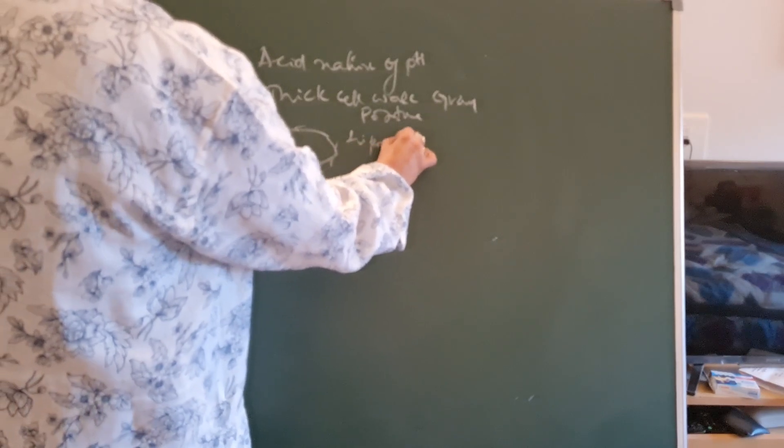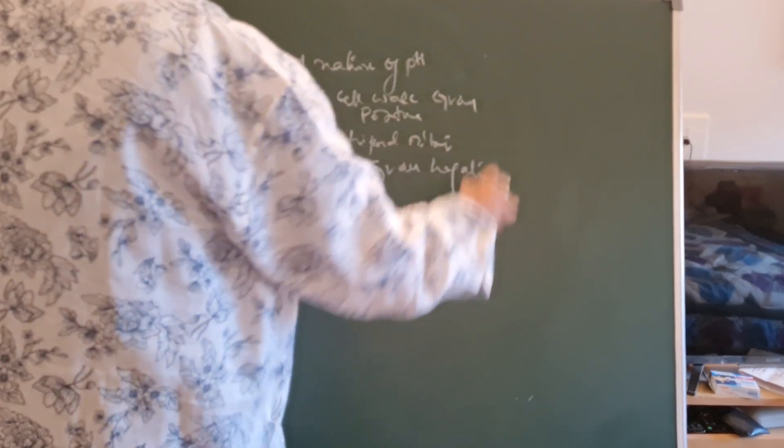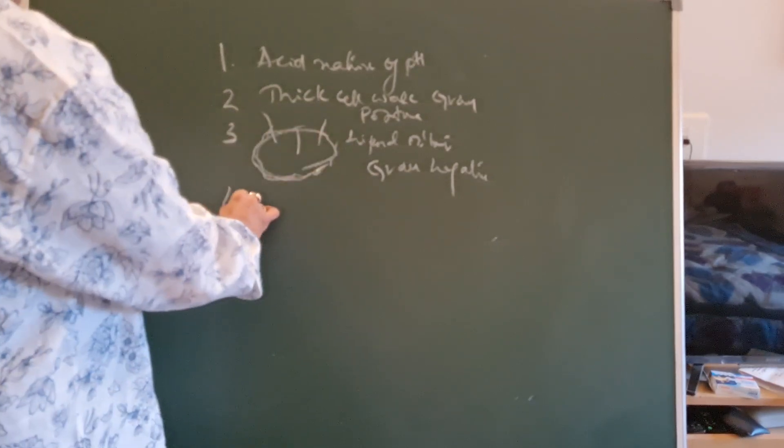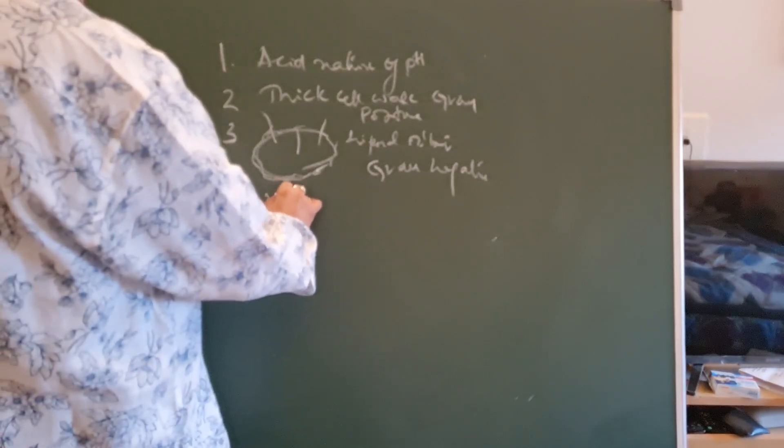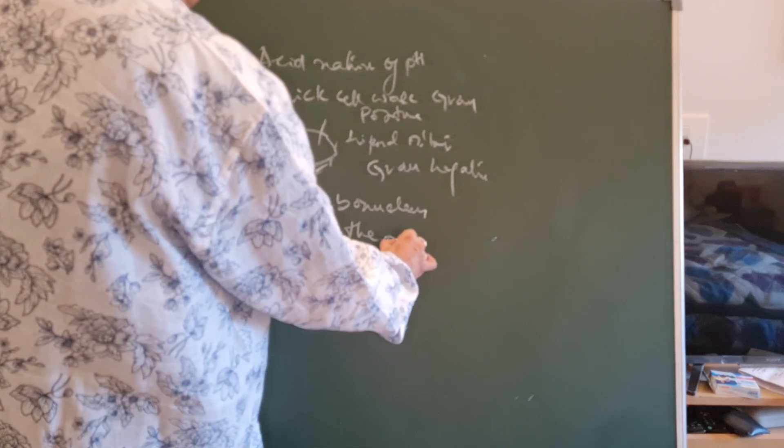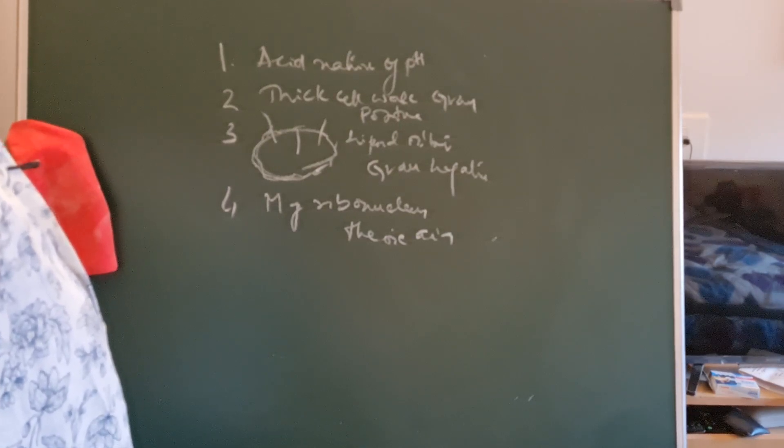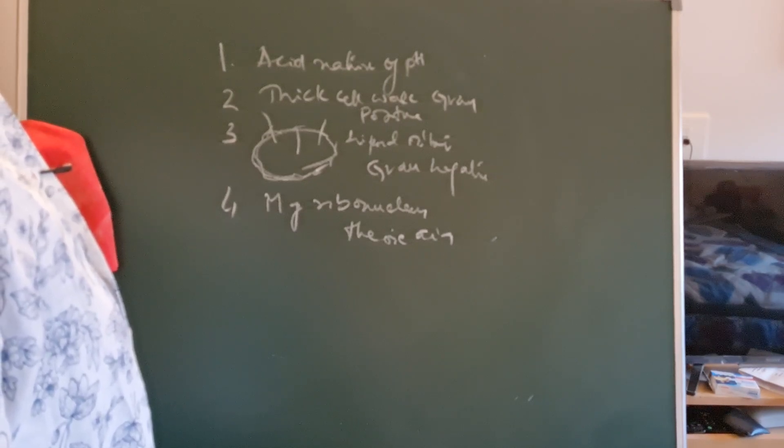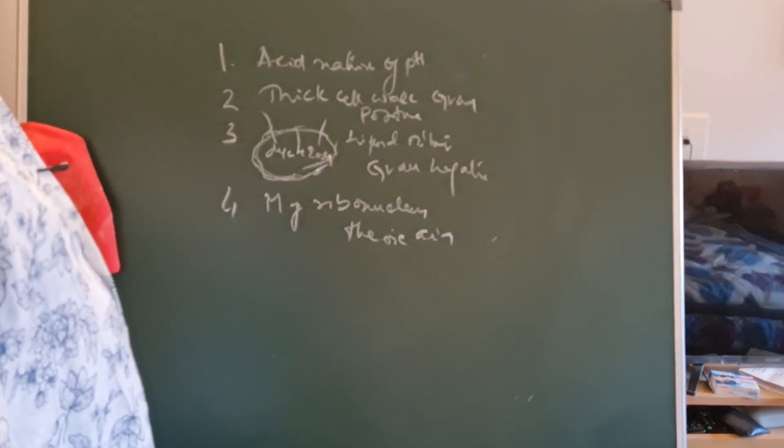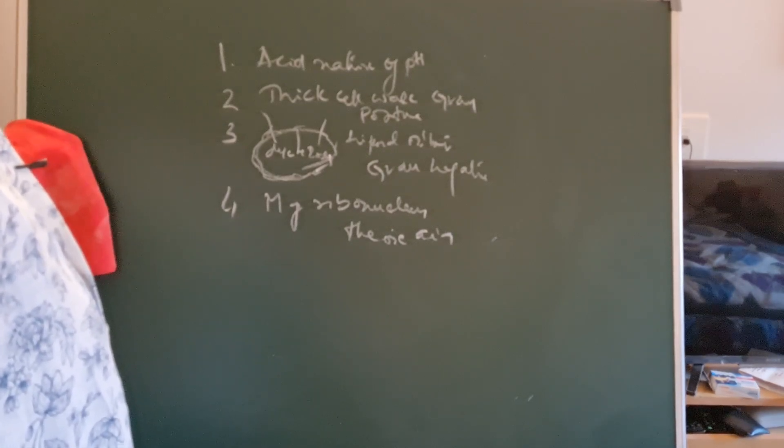During decolorization, this layer is dissolved and the iodine complex comes out. The fourth one is the chemical theory - magnesium ribonucleate and teichoic acid. So you should remember: acidic pH, they have more affinity toward basic dye; thick cell wall, 40 times thicker than gram negative; the iodine complex comes out; and magnesium ribonucleate and teichoic acid present in the gram positive cell wall that makes it retain the primary stain.